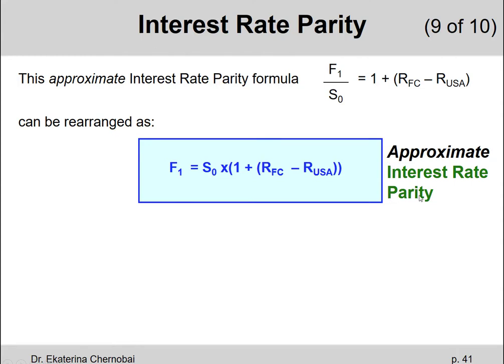This is the approximate Interest Rate Parity. By the way, I have an example coming up on the next slide on both the approximate and the exact Interest Rate Parity formulas. This formula calculates what the one-year forward rate that you're locking in today should be, depending on what today's exchange rate is, S0, and how the risk-free rates differ between the foreign and the domestic countries.